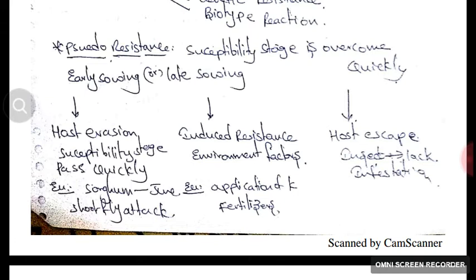Application of potassium fertilizers is an example of induced resistance. In host escape, the insect does not attack the crop.